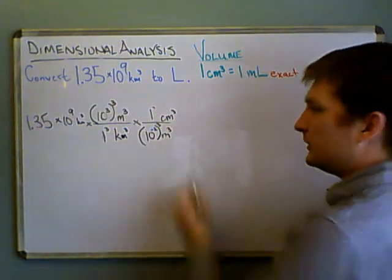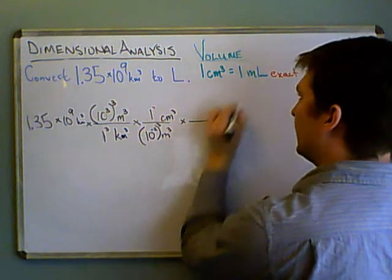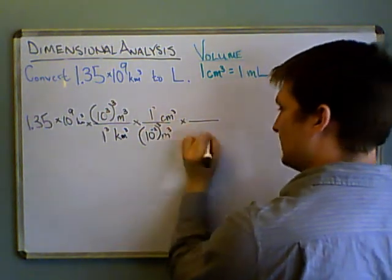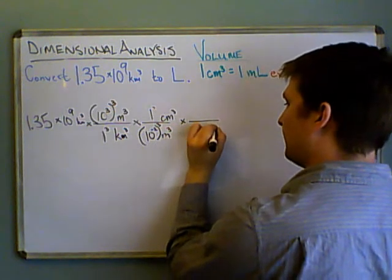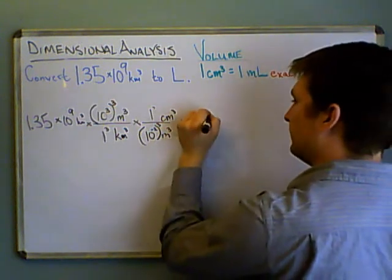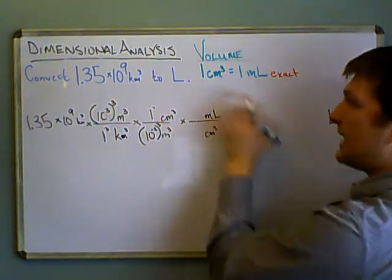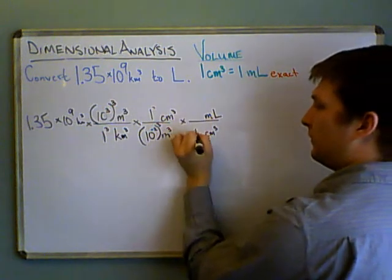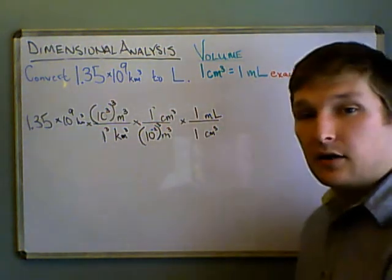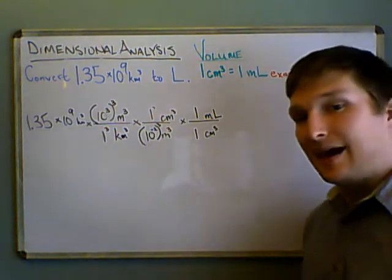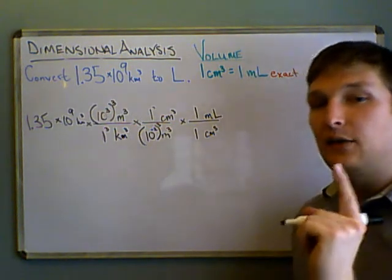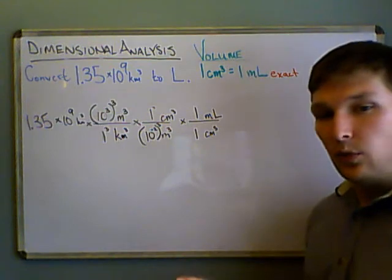Okay, now we're in centimeters cubed. We could go directly to milliliters. So centimeters cubed goes on the bottom, and milliliters. Now since that's an exact thing, we have one to one. So that's taken care of, since we're told that that's exact, that's how we define one milliliter. We don't need to worry about it now.